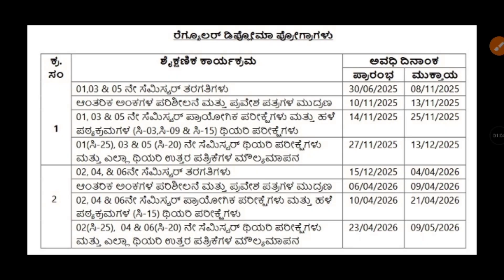First, understand what C20 and C25 syllabus mean. C20 means curriculum 2020 — if you took admission in the first year from 2020 to 2024, your syllabus is C20. C25 means the syllabus for students who took first year admission in the year 2025. This should be clear for all of you.